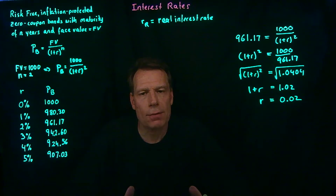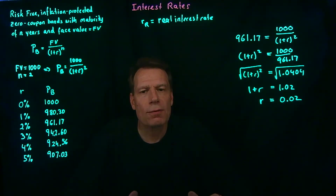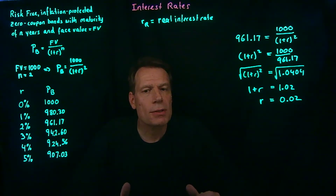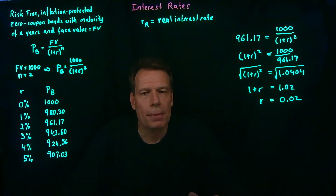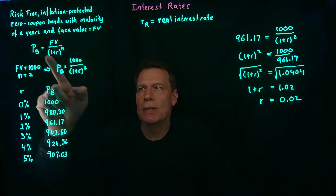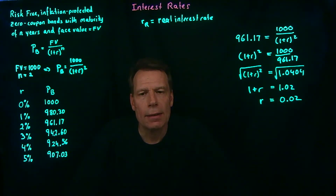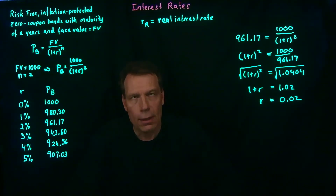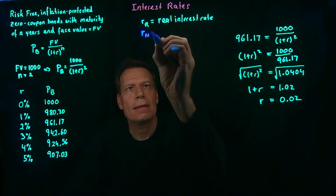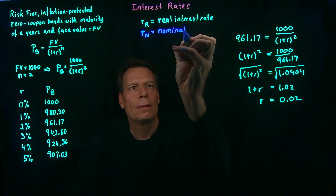By observing these kinds of bonds, we can infer what the real interest rate in the economy is. But the government doesn't just offer inflation-protected bonds — it also offers non-inflation-protected bonds that are still risk-free but no longer inflation-protected. When calculating the prices of those bonds, we use exactly the same formula, except the interest rate we use would be the rate from a savings account that's risk-free but not inflation-protected. We call that the nominal interest rate, denoted with a subscript N.